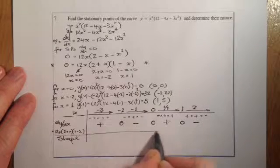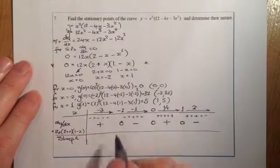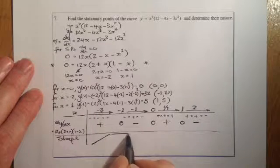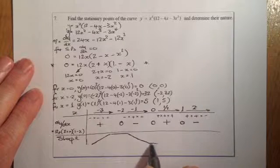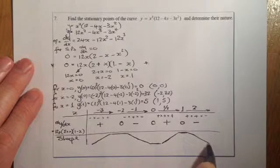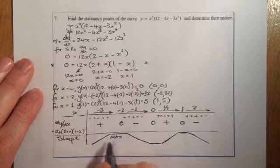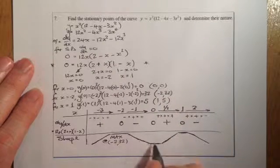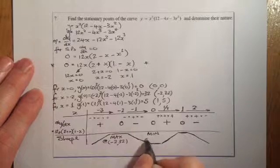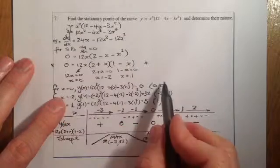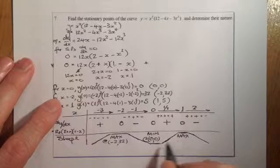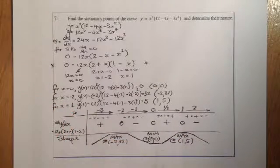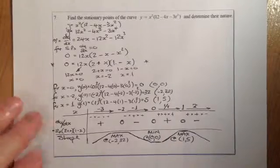So the shape of the graph: positive slope approaching minus 2, flat at minus 2, negative slope to 0, flat at 0, positive slope to 1, flat at 1, then negative. This gives a maximum turning point at (minus 2, 32), a minimum turning point at (0, 0), and another maximum turning point at (1, 5).